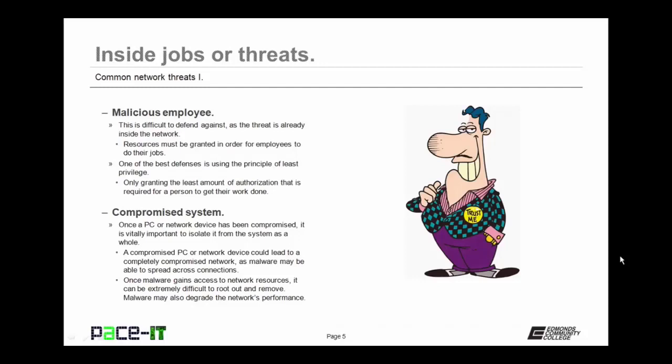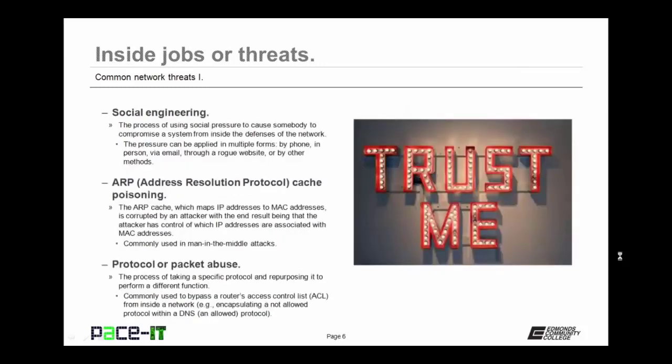Compromised systems are another threat. Once a PC or network device has been compromised, it is vitally important to isolate it from the system as a whole. A compromised PC could lead to a completely compromised network as malware may be able to spread across its connections. Once malware has gained access to network resources, it can be extremely difficult to root out and remove. Malware may also degrade the network's performance causing other issues.